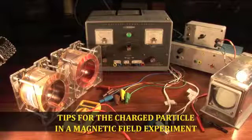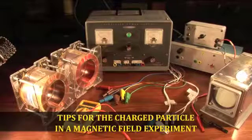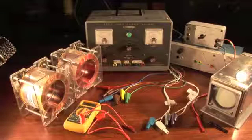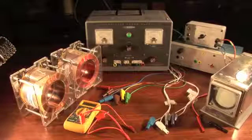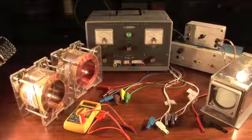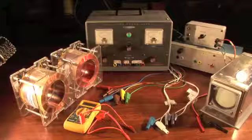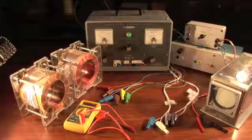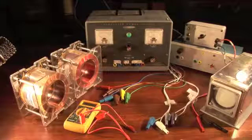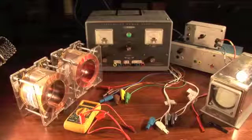In the charged particle in the magnetic field experiment, the main point is to measure the deflection of electrons as they pass through magnetic fields of known strength. When setting up the equipment, it might seem really hard, but actually it's pretty straightforward.